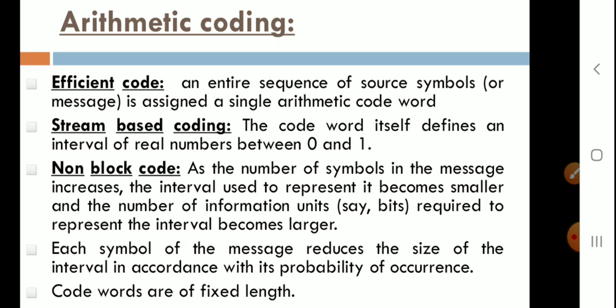As the number of symbols in the message increases, the interval used to represent it becomes smaller, and the number of information units required to represent the interval becomes larger. Each symbol of the message reduces the size of the interval in accordance with its probability of occurrence.